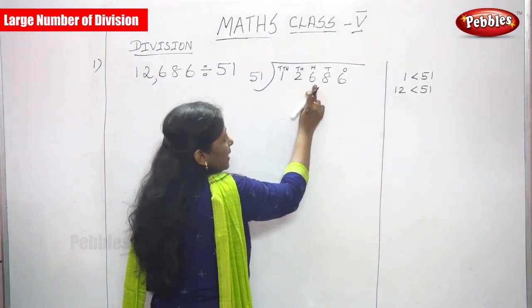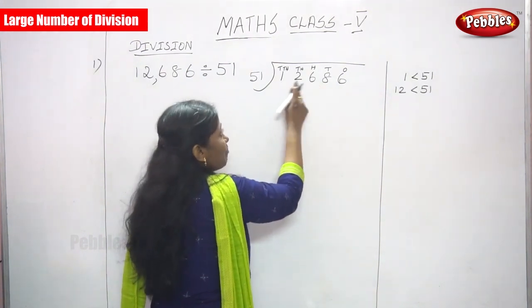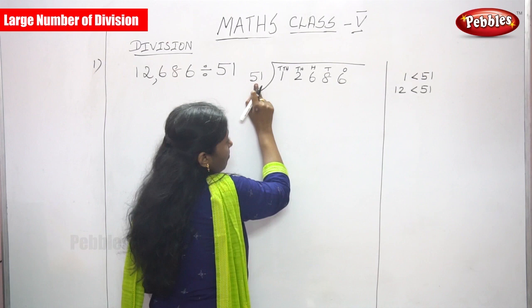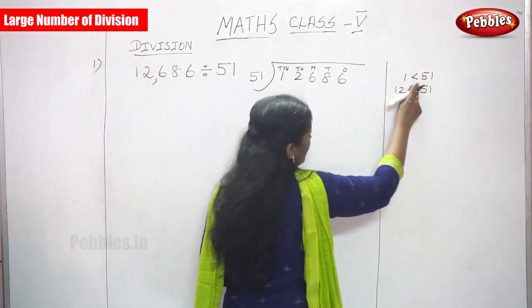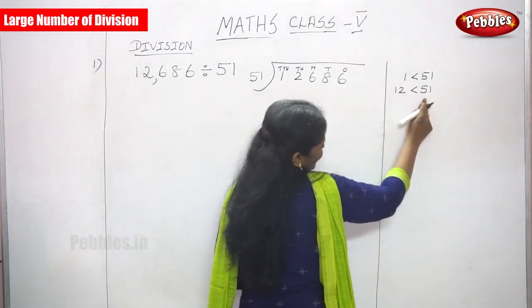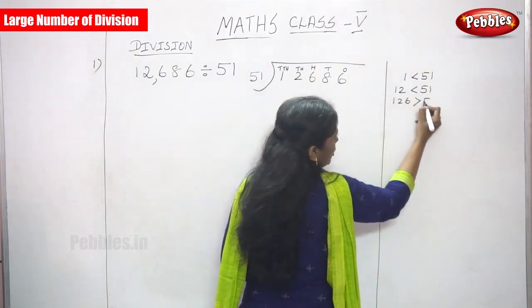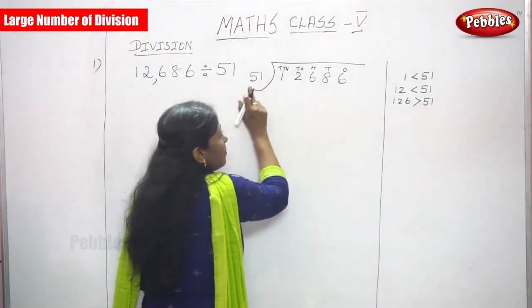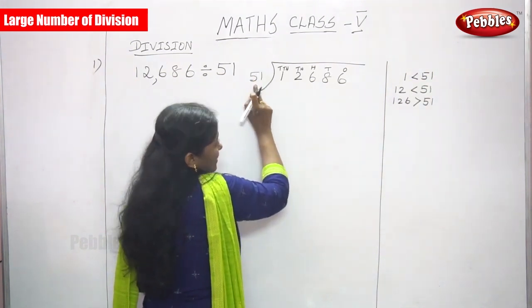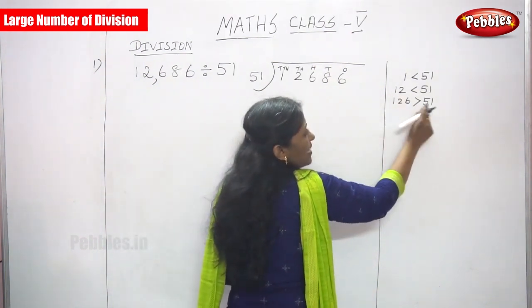The next digit position is hundreds. You just look at the numbers and compare with the divisor. First, 1 is less than 51 — you can't divide. The next digit gives 12, still less than 51. Then 126 is greater than 51. The dividend must always be greater than the divisor, so 126 is where we start.